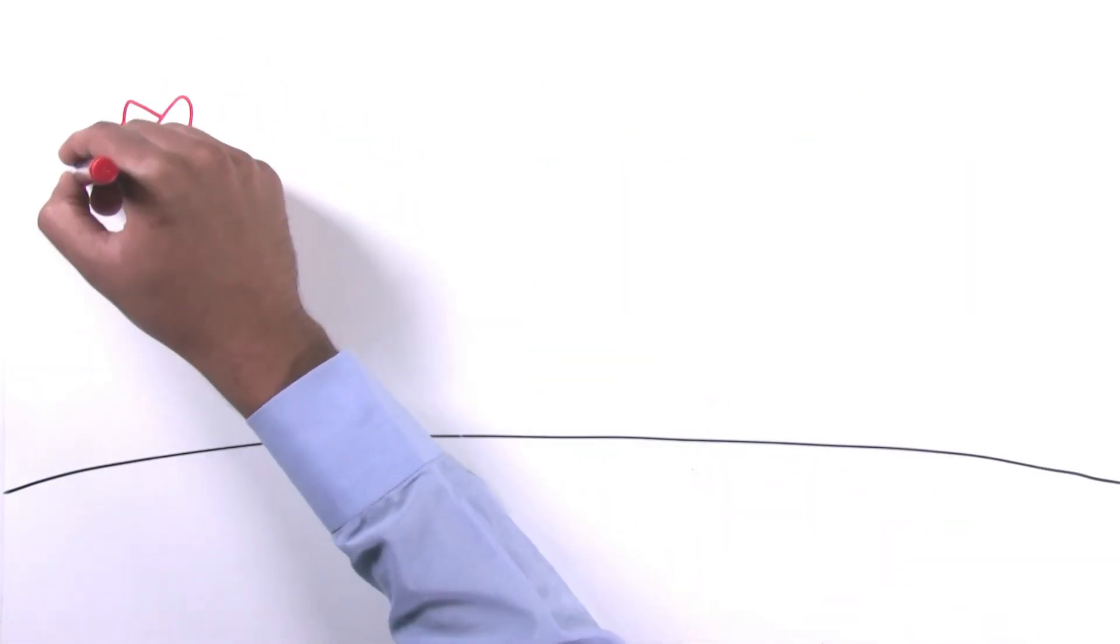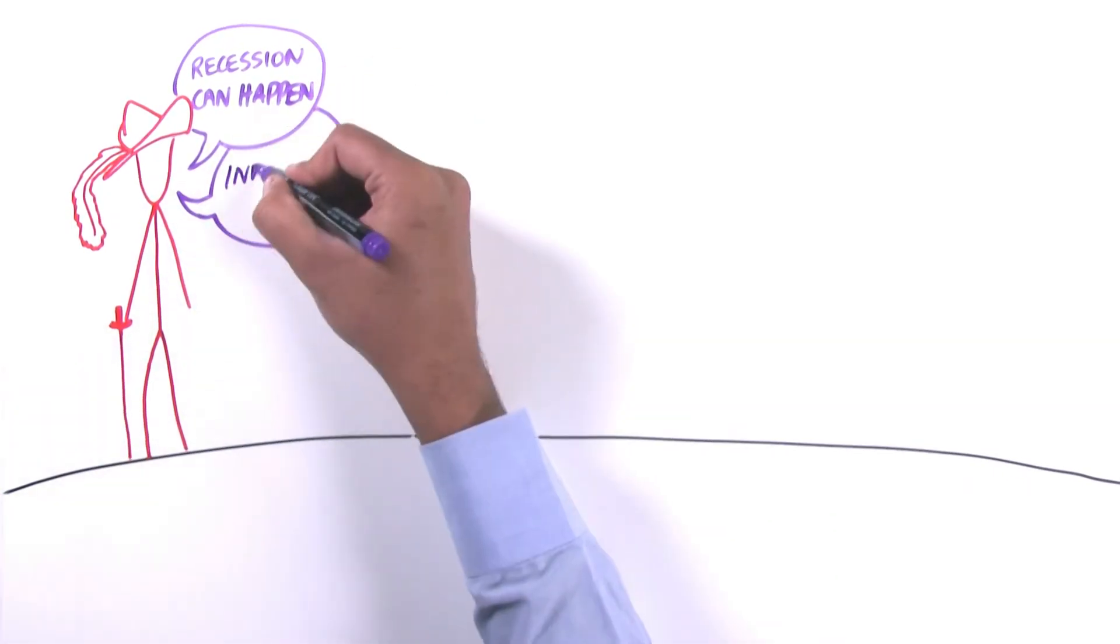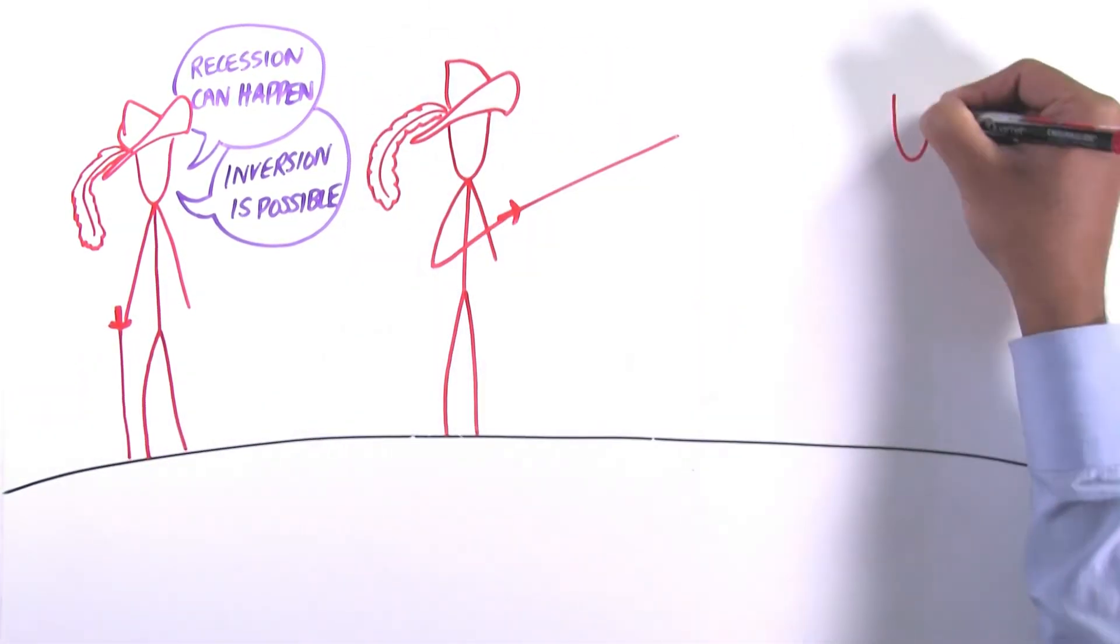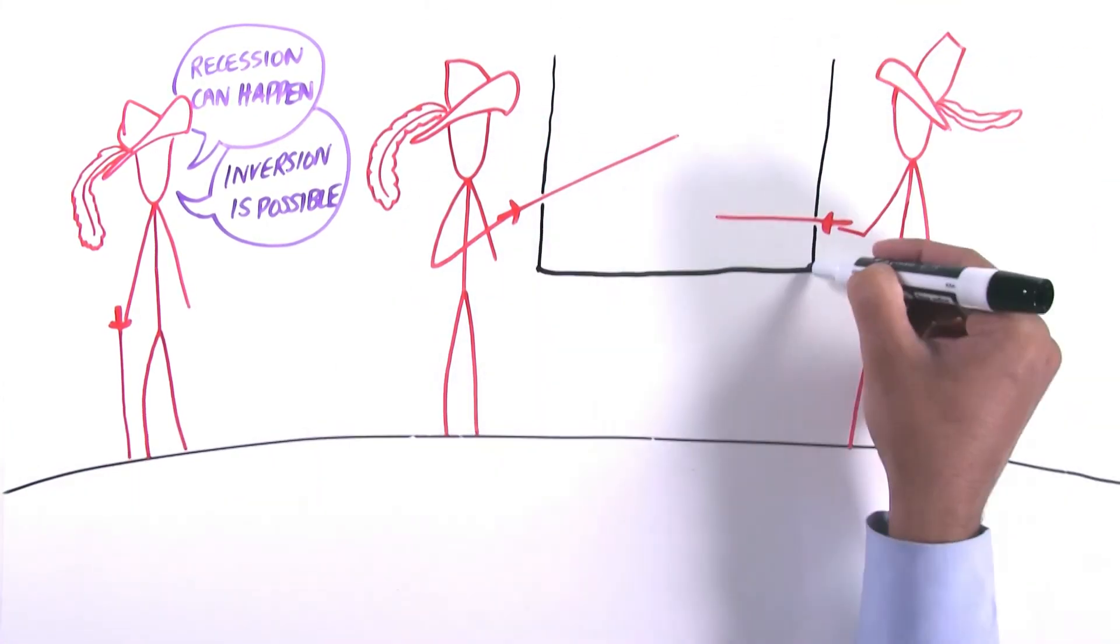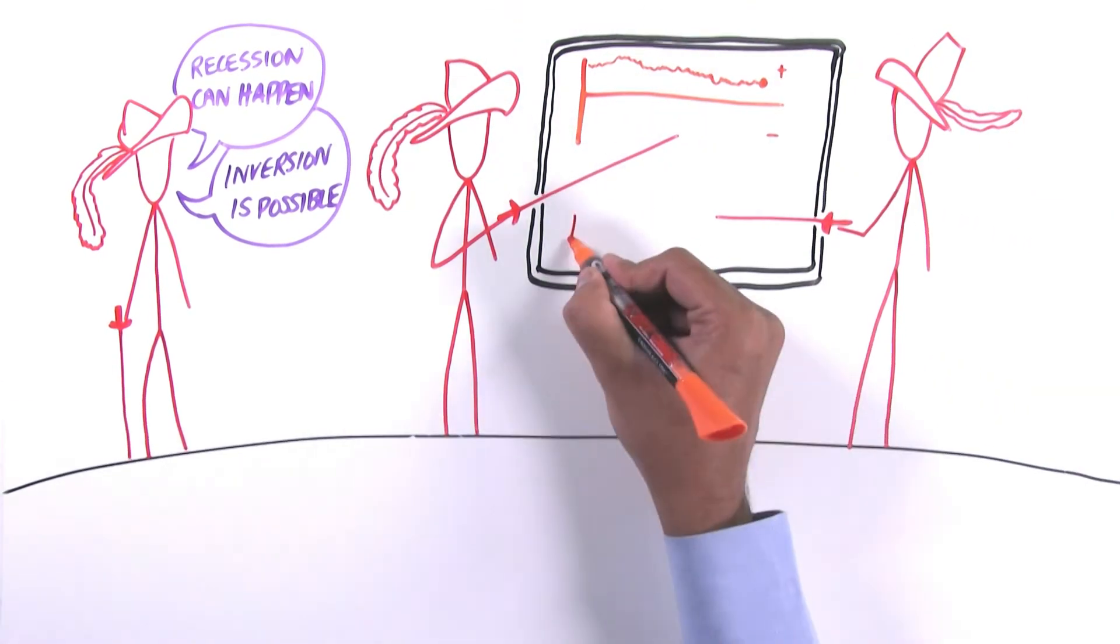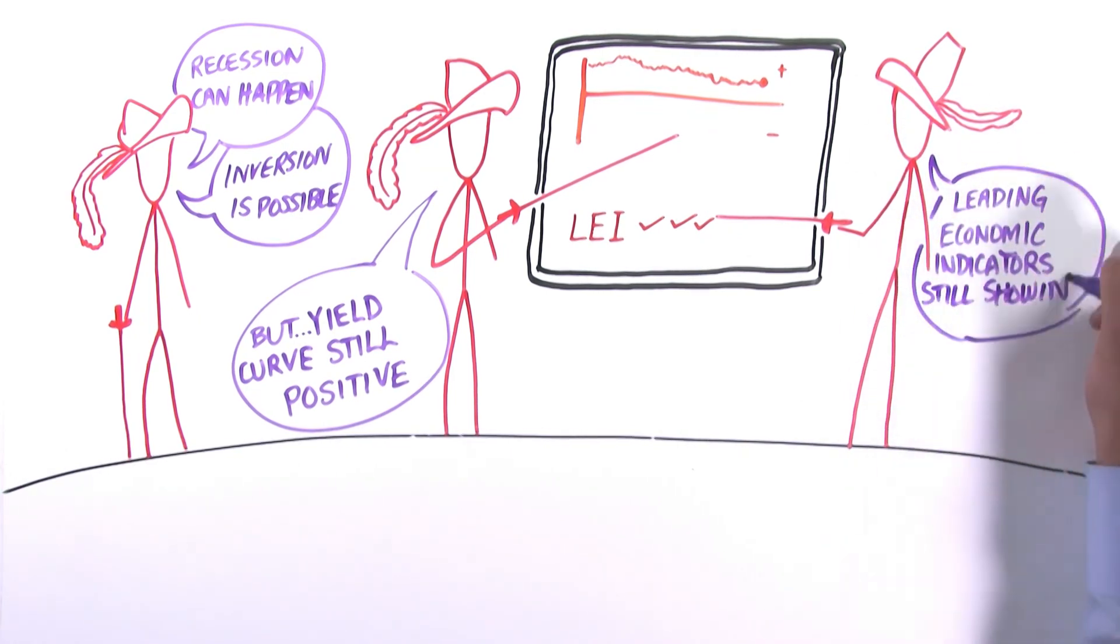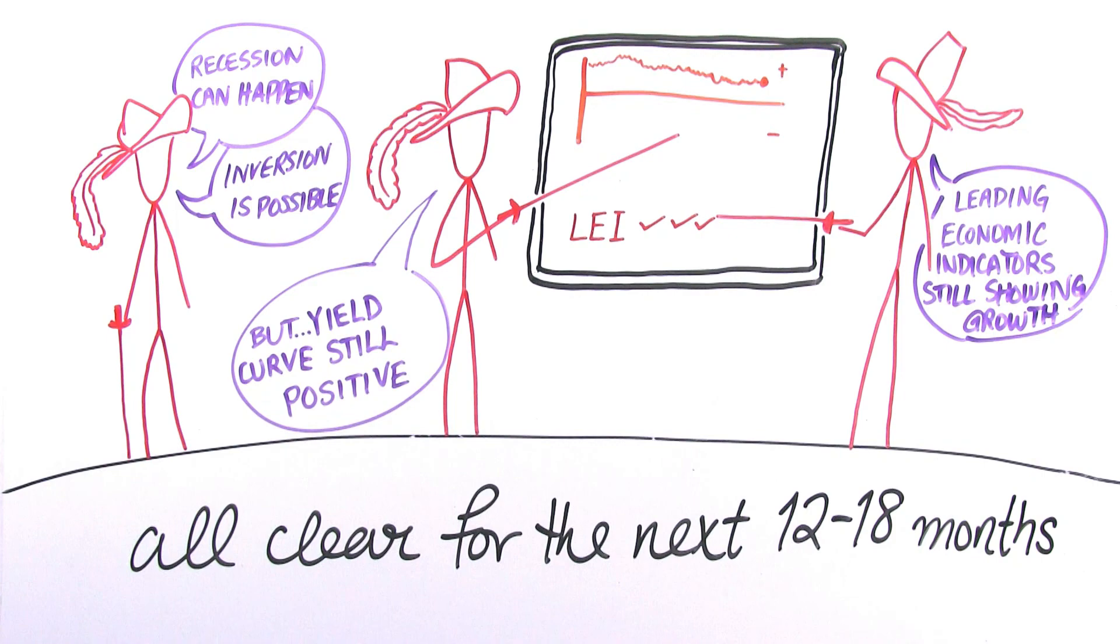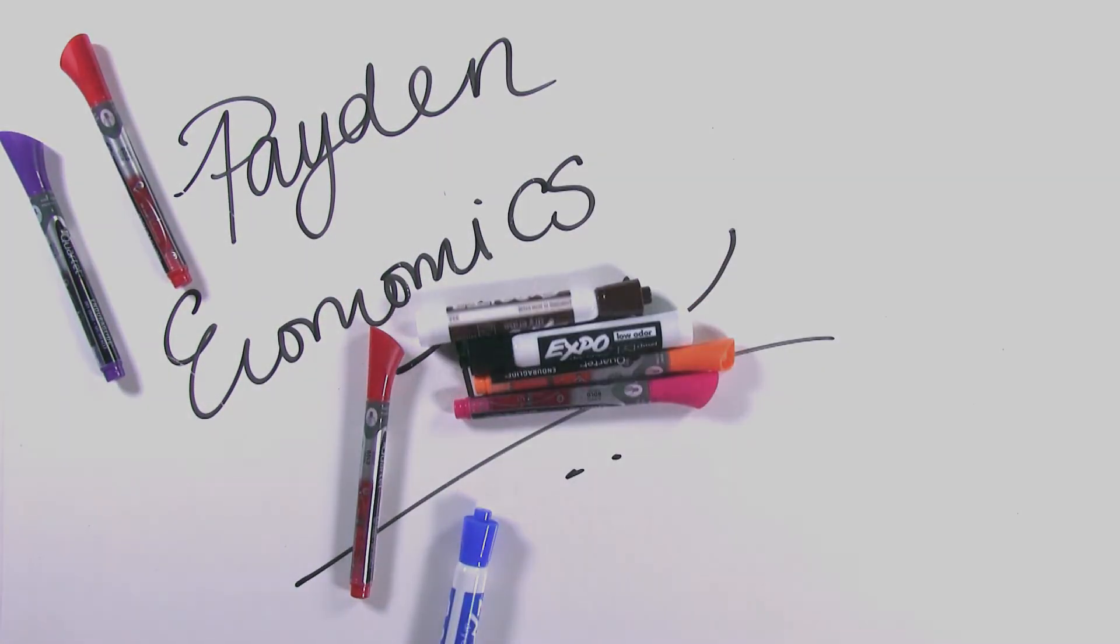So yes, it's possible that the yield curve inverts in the months ahead, and it's possible that we enter a recession in the not-too-distant future. But from where we stand today, the yield curve is still positively sloped. The other indicators which we're checking our bearings with are still pointing to positive growth. That is the Leading Economic Indicators. So we think we have the all clear over the next 12 to 18 months. This is the Payton Economics team signing off.